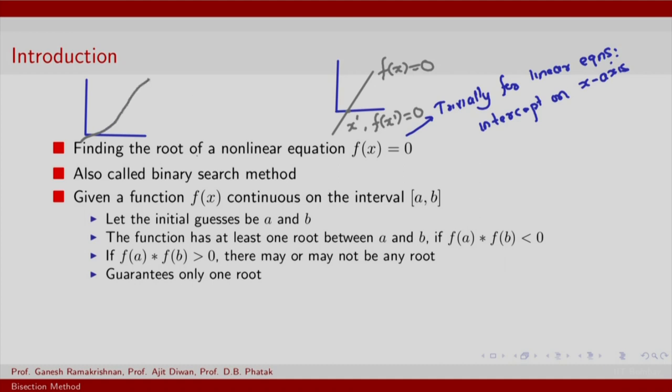The binary search method basically is an iterative method. Instead of a one-shot solution such as in the case of the x intercept, you start with some two points. Let us say point here and point here, and we will canonically call these points a and b. So given a function f(x), we will assume that it is continuous on this interval a and b.